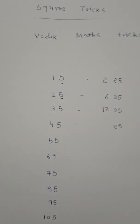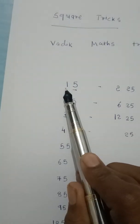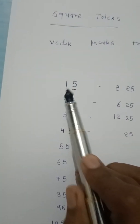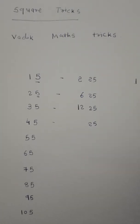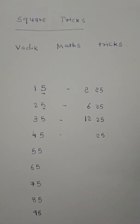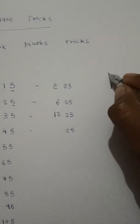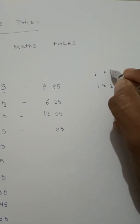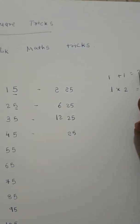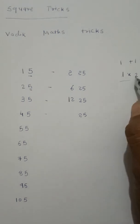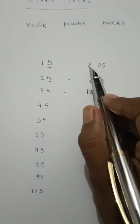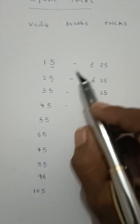Now what has to be done? The first number is 1. Add 1 to that number: 1 plus 1 is equal to 2. Multiply both: 1 into 2 is equal to 2. So our square is 225.